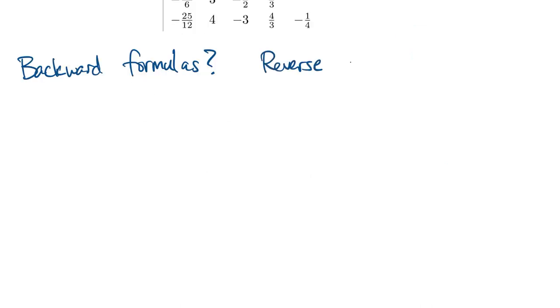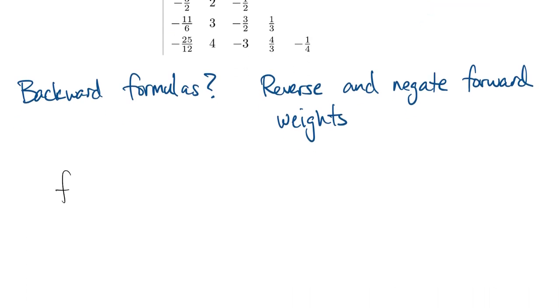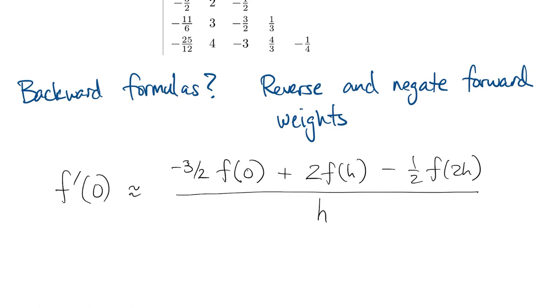Now what about backward differences? It turns out that these are not really different. You just negate the forward difference weights and reverse their order to get the corresponding backward case. For example, here's a three-point forward difference formula. The related three-point backward difference formula just replaces h by negative h everywhere. Or if you look only at the weights as you go from left to right, then for the backward difference, you negate and reverse them.